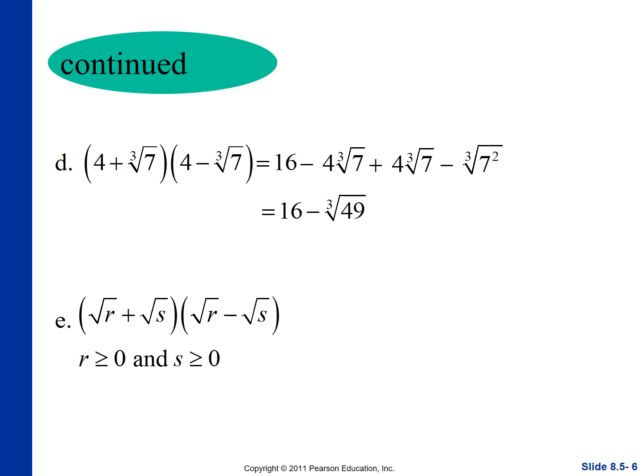Over here we have (√r + √s)(√r - √s), where r ≥ 0 and s ≥ 0. This is again a difference of squares: square the first term minus square the last term. That becomes just r minus s. Recognizing these patterns lets you get them done a lot quicker, but you've got to put the work and time into the homework.